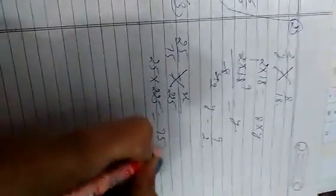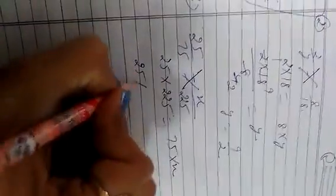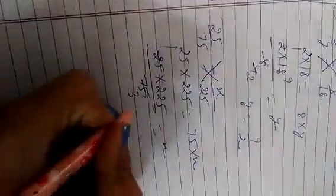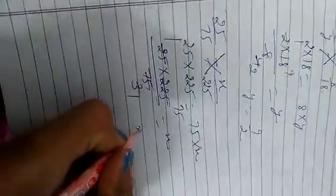Cross multiplication: 25 into 225 is equal to 75x. 25 into 225 divided by 75 is equal to x. 25 ones are 25, 25 threes are 75. 3 ones are 3, 75 threes are 225. It means x is equal to 75.